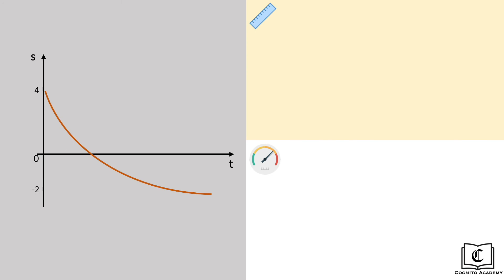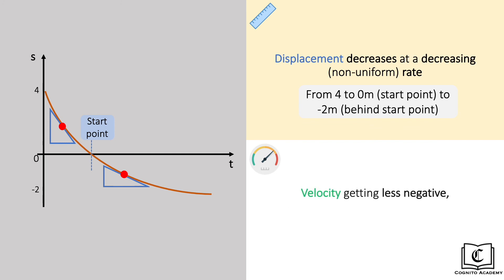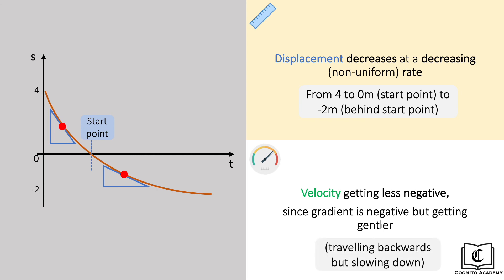Now to the final graph where we combine both positive and negative displacements in one graph. We can see here that the object's displacement is decreasing from 4 meters to 0 meters, meaning that the object is back at the start point, and further back towards negative 2 meters, meaning it ends up 2 meters behind the start point. Displacement is decreasing at a decreasing rate, since we can see from the gradient that the graph is pointing downwards but becoming gentler, meaning velocity is negative but becoming less negative. In layman terms, the object is moving backwards across the start point but slowing down.